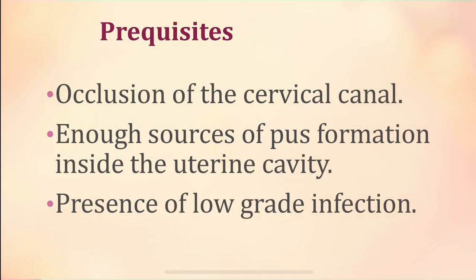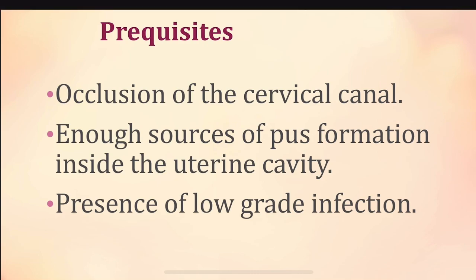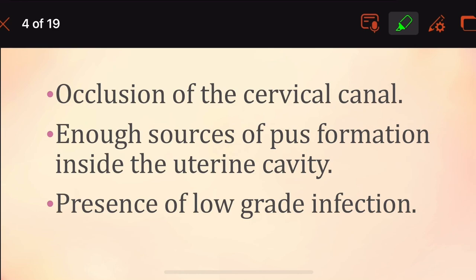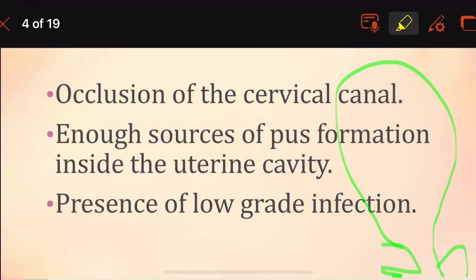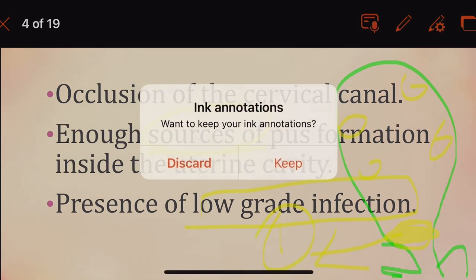Prerequisites are the conditions which have to be present prior for pyometra to occur. If this is the uterus, the cervix, and continuation as the vagina, we should have an obstruction or occlusion in the cervical canal — that is the first prerequisite. Second, there should be enough sources of pus formation inside the uterine cavity, and there should be a presence of low-grade infection in the uterine cavity.